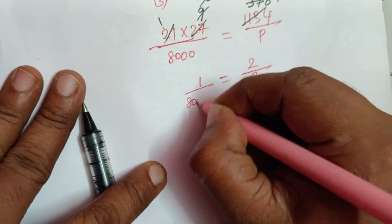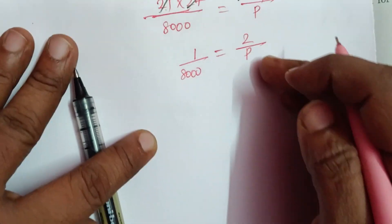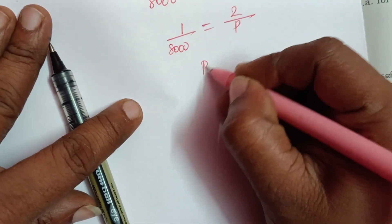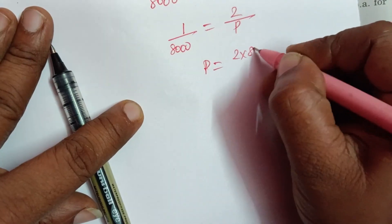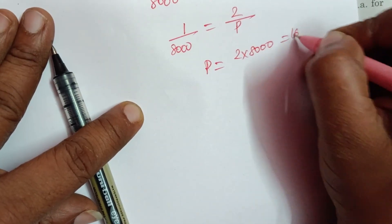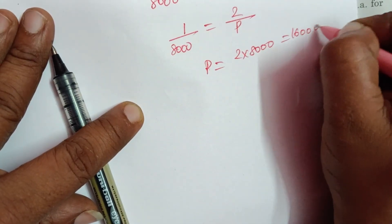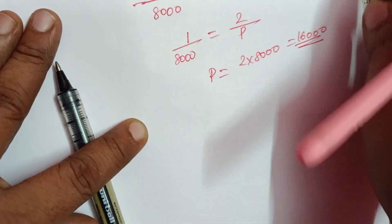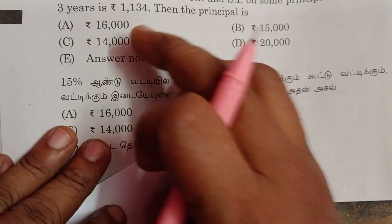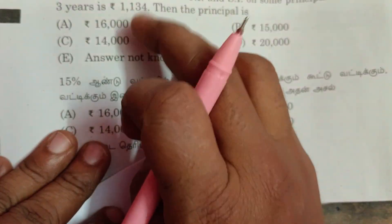So 8000 is in the denominator. We can cancel: 2 into 8000 gives 16000. So the principal amount answer is 16,000.